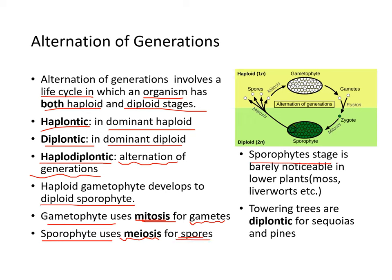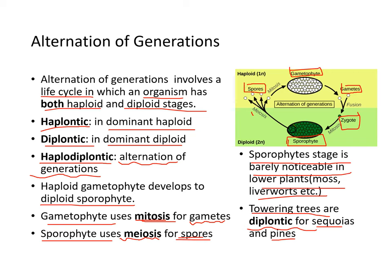The sporophyte stage is barely noticeable in lower plants such as moss and liverworts, and the towering trees like sequoias and pine trees are typically diplontic. The haploid gametophyte goes through mitosis to produce gametes, which fuse to produce a zygote. The zygote undergoes mitosis to become a sporophyte, which undergoes meiosis to produce spores. The spores then go through mitosis to produce a full gametophyte, and the cycle repeats.